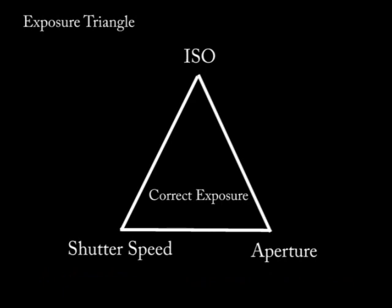Aperture also controls depth of field, which we'll cover in a future video. Shutter speed is something you'd bear in mind if you're shooting a fast-moving subject - maybe wildlife, sports, cars, football, or other multi-sport. But these three elements - your ISO, shutter speed, and aperture - actually make up your final exposure.